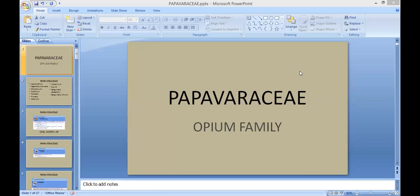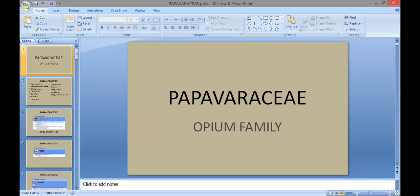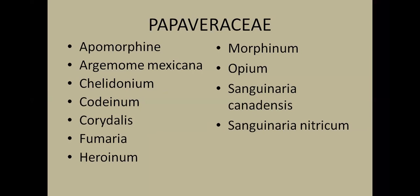Today we're going to start with a new family — the Papaveraceae family, also known as the opium family. The main remedies in this family include Apomorphine, Argemone Mexicana, Chelidonium, Codinum, Corydalis, Fumaria, Heroin, Morphinum, Opium, Sanguinaria Canadensis, and Sanguinaria Nitricum.